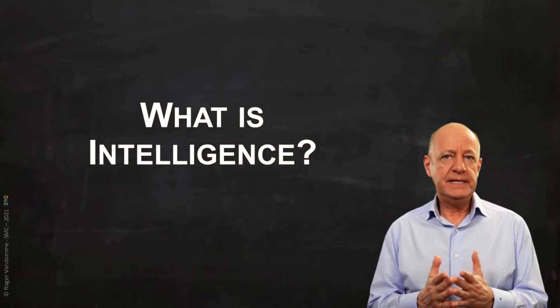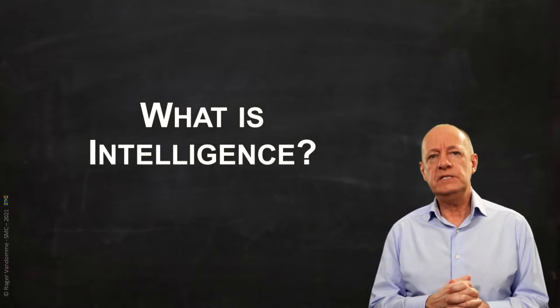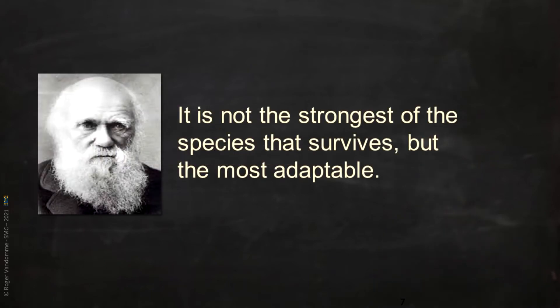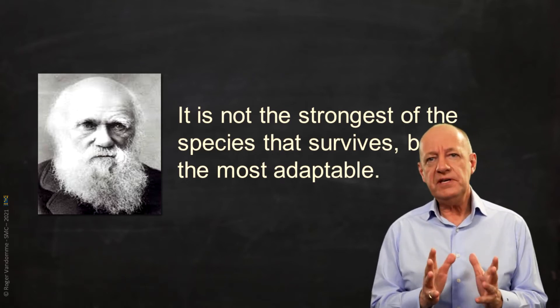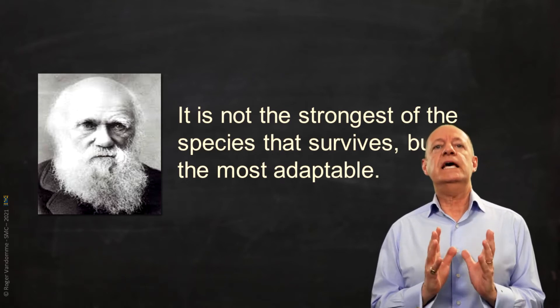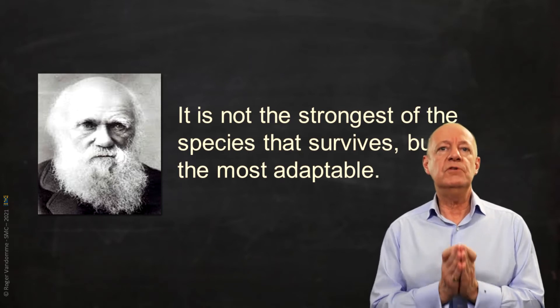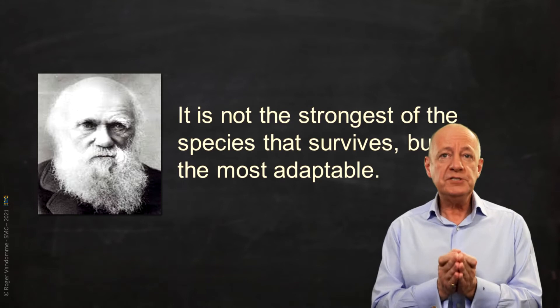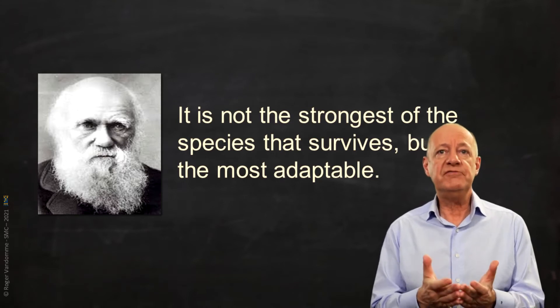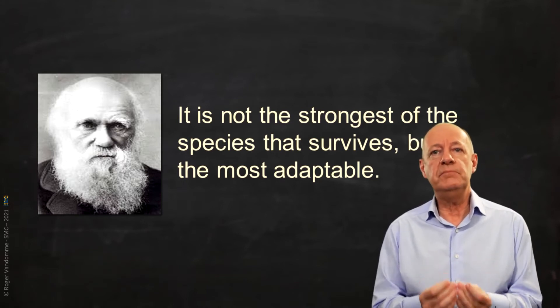So before we venture to an answer, let's see what Darwin tells us. Darwin tells us that the species that survive are not necessarily the strongest, but the ones that are the most adaptable — adaptability being a kind of force. When you think about it, adaptation can only be done through a series of choices and therefore decisions. The most adaptable species is therefore the one that is able to make the best decisions.